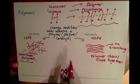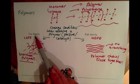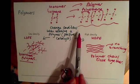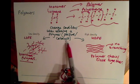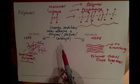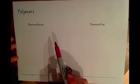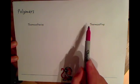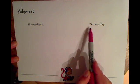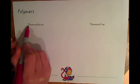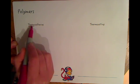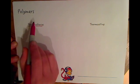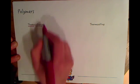Whether polymers are high or low density depends on the conditions when they are made. There are two different types of polymers: thermosoftening and thermosetting. Look at the names for clues — 'thermo' means heat. Thermosoftening plastics can be softened and reshaped with heat.